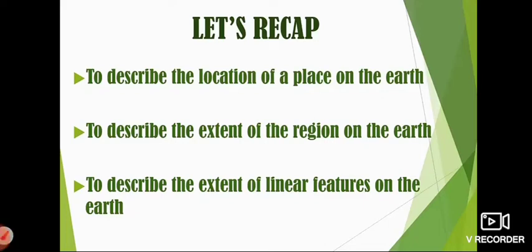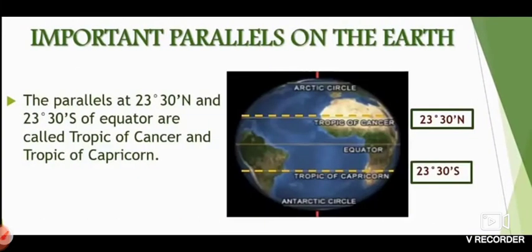Good morning dear students. Today we are going to continue with the lesson: Let Us Use the Graticule. In the previous video we learned to describe the location of a place on the earth, to describe the extent of a region on the earth, and to describe the extent of linear features on the earth — linear features means roads, rivers, etc. We described all this because of the Graticule. The Graticule is nothing but meridians and parallels. Now in this video we are going to study about some important parallels and meridians on the earth. First, let us study about important parallels on the earth.